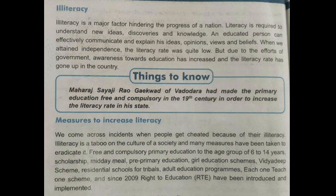Such illiteracy is actually due to the outlook of people and the way they perceive things. Sometimes people want their children to go to school, but because of economic barriers or unavailability of money, they are not able to do so. In some areas, the non-availability of educational institutions also causes the literacy rate to go down.